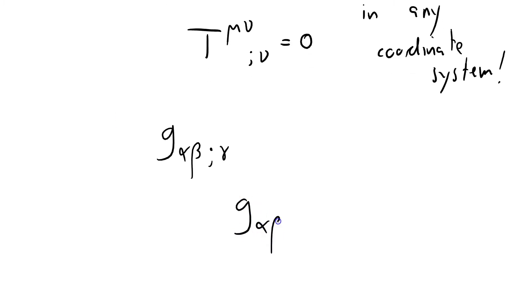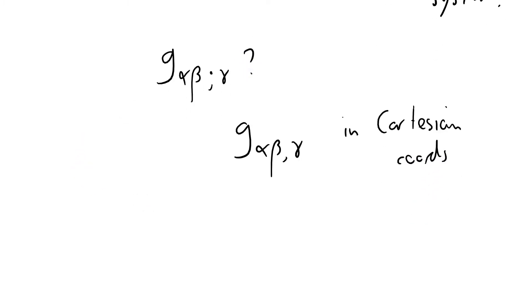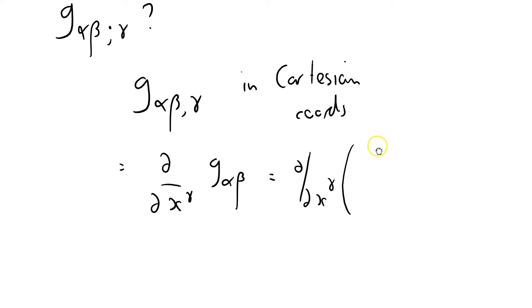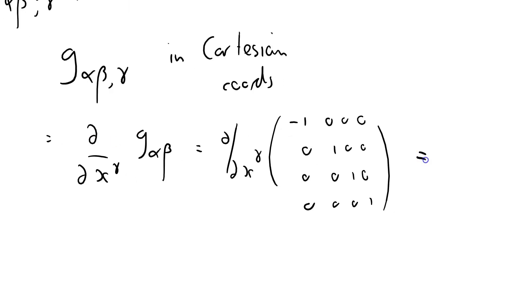Well what's this in Cartesian coordinates? You'll see I've left out the semicolon. I don't know what this is. I want to evaluate that. Well that's just equal to di by di x gamma of G alpha beta, which is di by di x gamma of the metric tensor in Minkowski space. Well, duh. Zero.